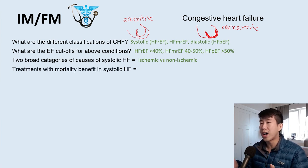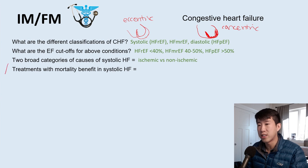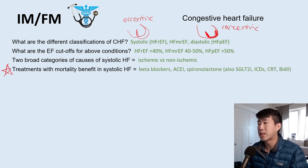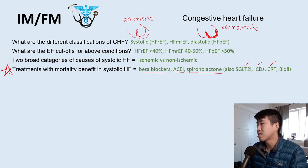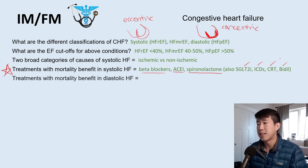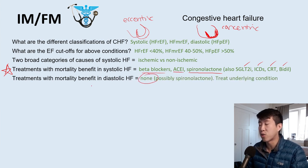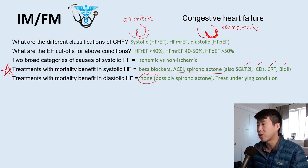Treatments with mortality benefit in systolic heart failure — definitely going to get pimped on this: beta blockers, ACE inhibitors, spironolactone, and if you want to go above and beyond, SGLT2 inhibitors, ICDs, cardiac resynchronization therapy, and BiDil in African-American populations. On the flip side, treatments with mortality benefit in diastolic heart failure — the answer is none. More recent studies suggest spironolactone and SGLT2 inhibitors may help, but the classic answer your attending wants is no proven mortality benefit.